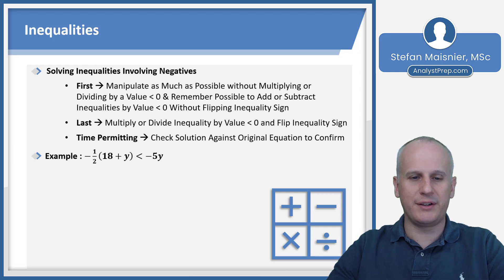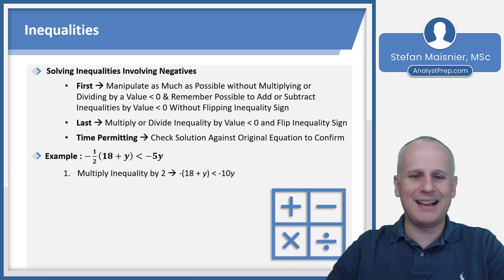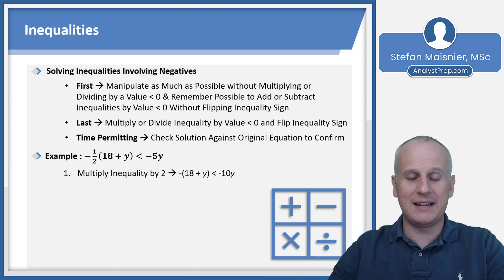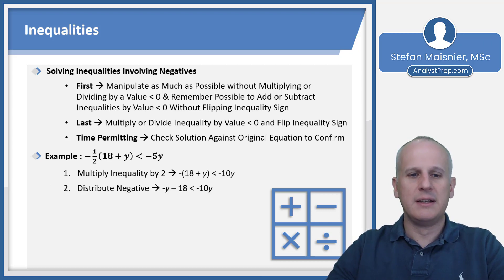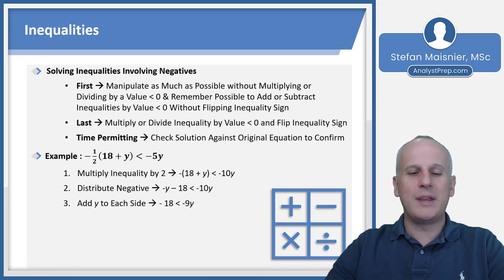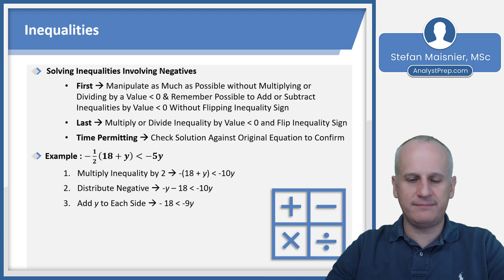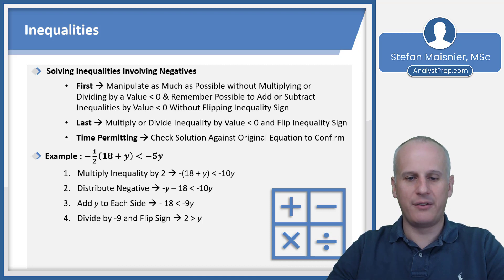We have a different inequality: negative one half times the quantity 18 plus y is less than negative 5y. Multiply by two — not negative two — keeping the negative for the end if necessary. That gives us negative (18 + y) < −10y. Distributing the negative: −y − 18 < −10y. Add y to both sides: −18 < −9y.